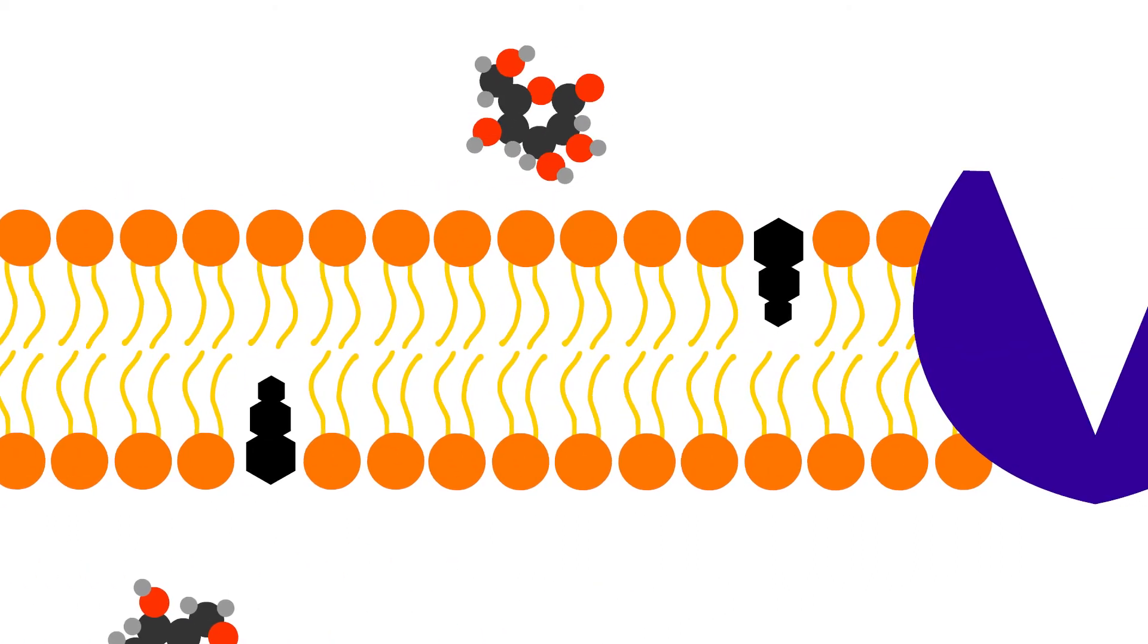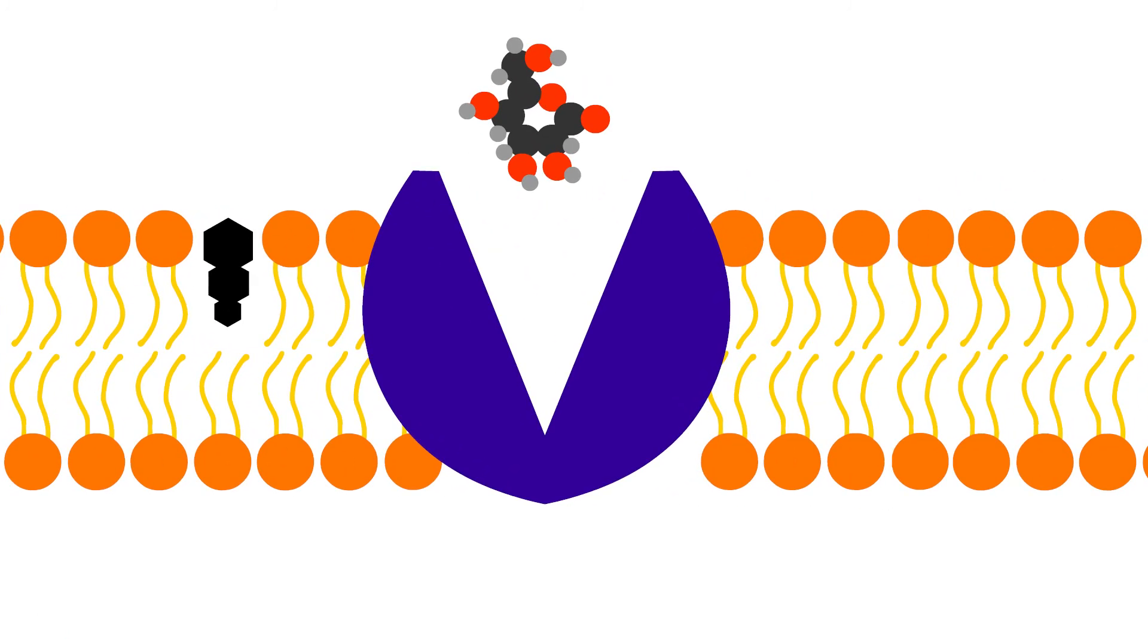After floating along the membrane, they come across a new type of protein. This one almost looks like a claw with one end open. They enter, and Connie Carbon asks if anyone has the ATP. The Hydro Twins take it out.